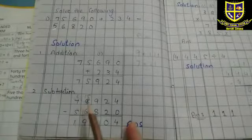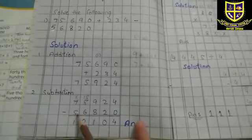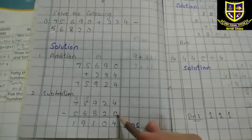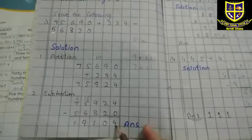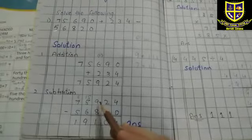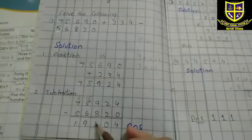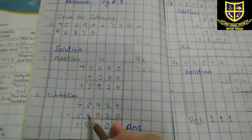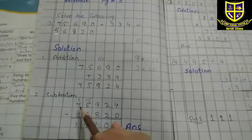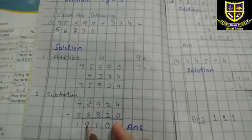Give the second heading 'Subtraction.' Write 75,924 and below it write the third number 56,820. Since we are doing minus: four minus zero means nothing is being subtracted from four, so the answer is four. Two minus two — nothing remains, so we write zero. Nine minus eight — nine minus eight, one remains, so we write one. Then we have five and we need to subtract six from it. Since five is smaller, we will borrow from seven — seven becomes six, and five becomes fifteen. Fifteen minus six gives nine.